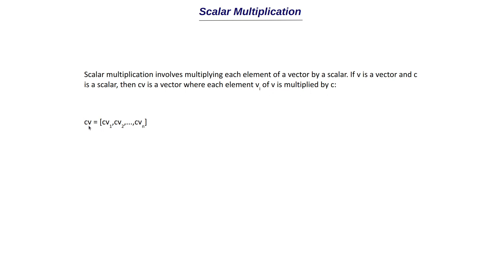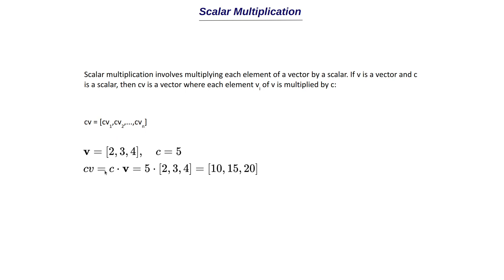This can be represented as: v is a vector with values v1, v2, v3 up to vn, and c is the scalar. For scalar multiplication, we take c and multiply it with all the individual elements of vector v to get the result. For example, if the vector is 2, 3, 4 and c equals 5, then c·v equals 5 times 2, 3, 4, giving the result 10, 15, 20.